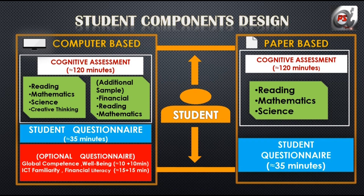Let us first discuss about the designing of student components — computer-based. This will be divided into three sections. The very first is cognitive assessment and it will last up to 120 minutes, i.e. 2 hours. In this section, the student will be assessed upon their reading, mathematics, science and creative thinking. The financial is an additional sample which will not be included as such in the main survey, but its sample will be collected for further usage.